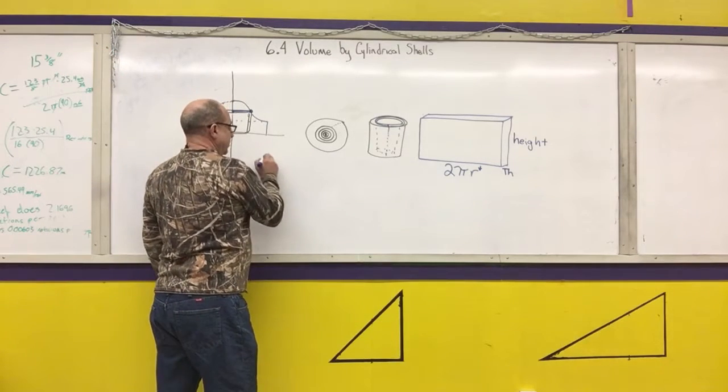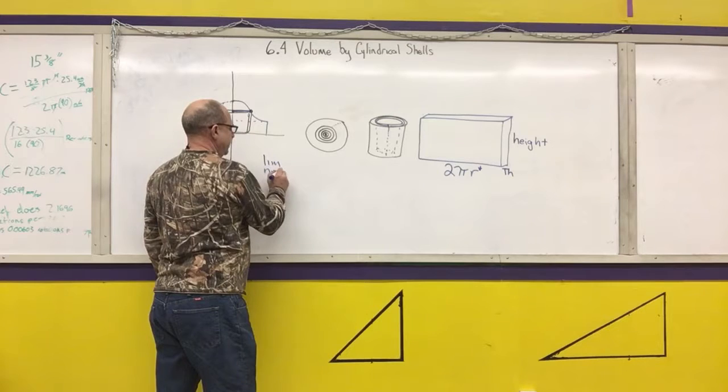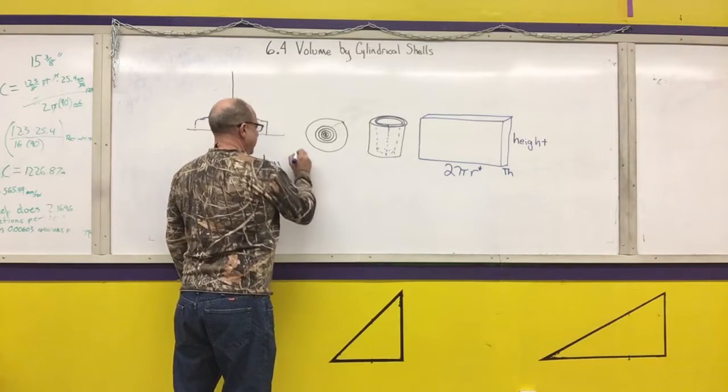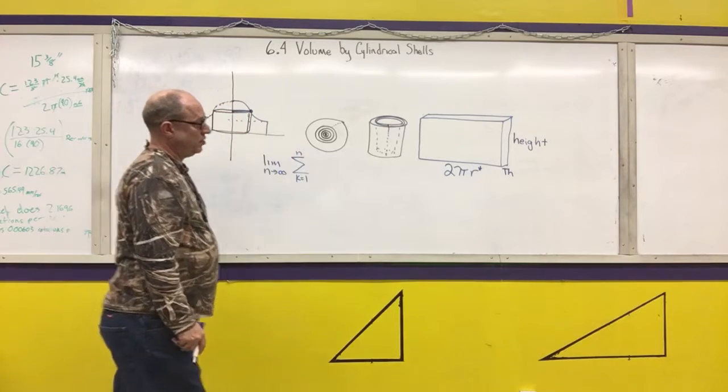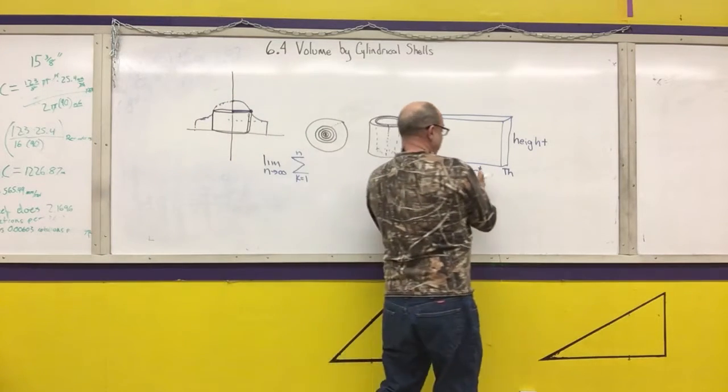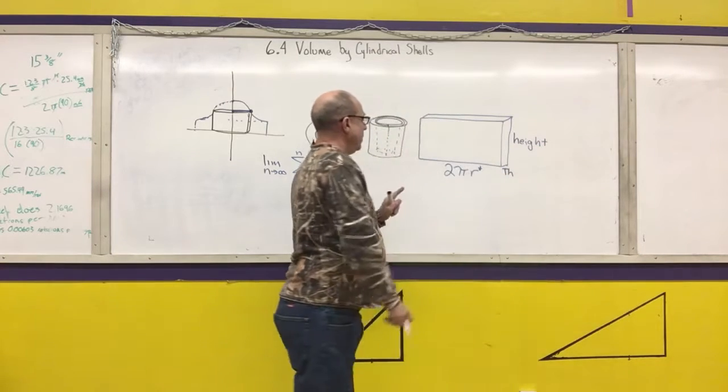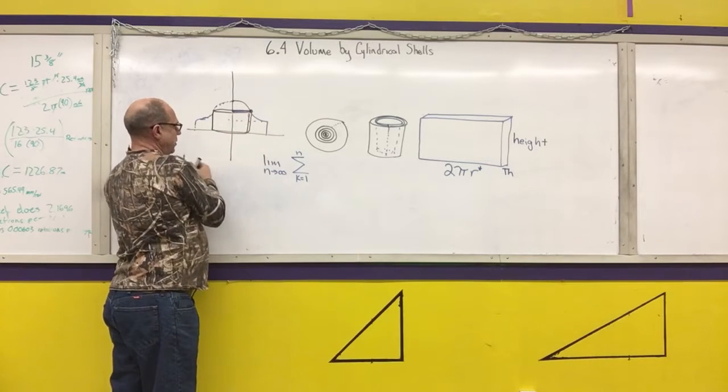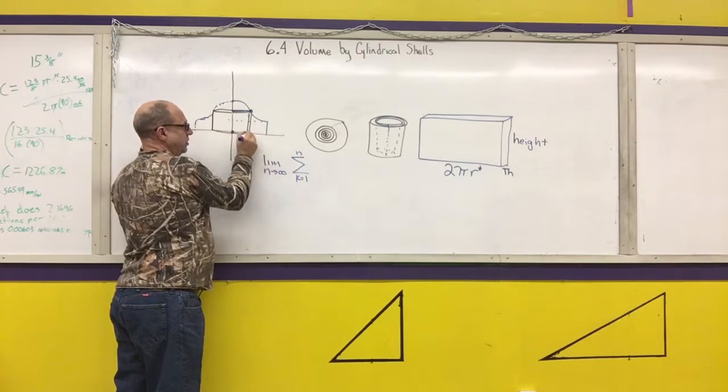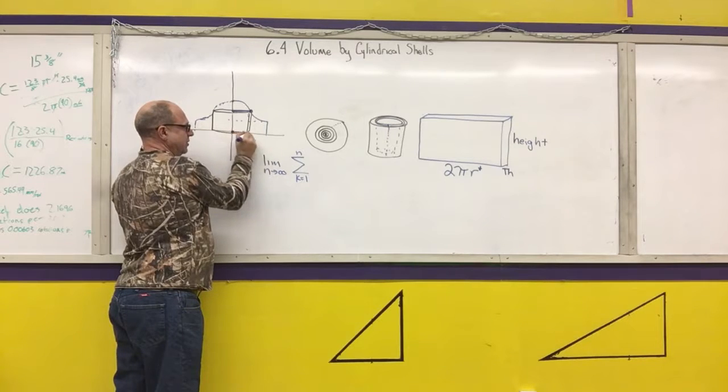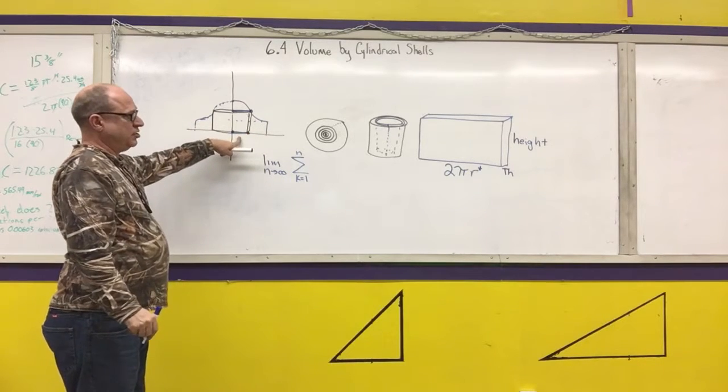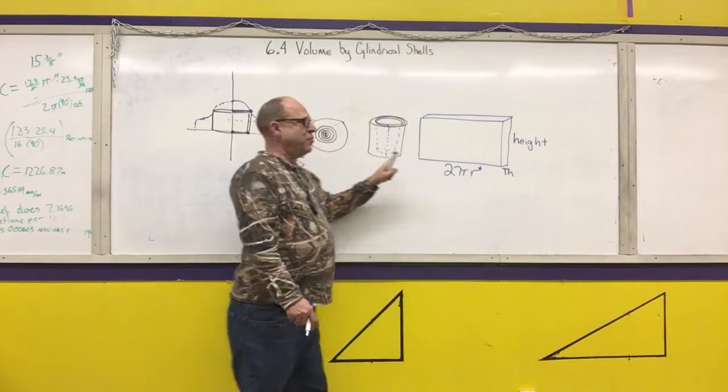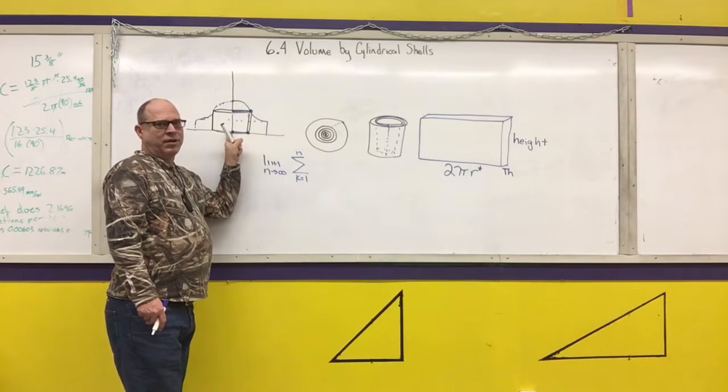It's the summation, it's the limit as n approaches infinity of the summation of k equals 1 to n. Well, I need the volume, which is going to be this times this times this. Let's look to see what that r is. That r is the distance between here and here. The distance between the origin and the x-axis, in this case, is just going to be x. But I'm just going to put an r there, because if I put an x there, it only works if I rotate around the y-axis.